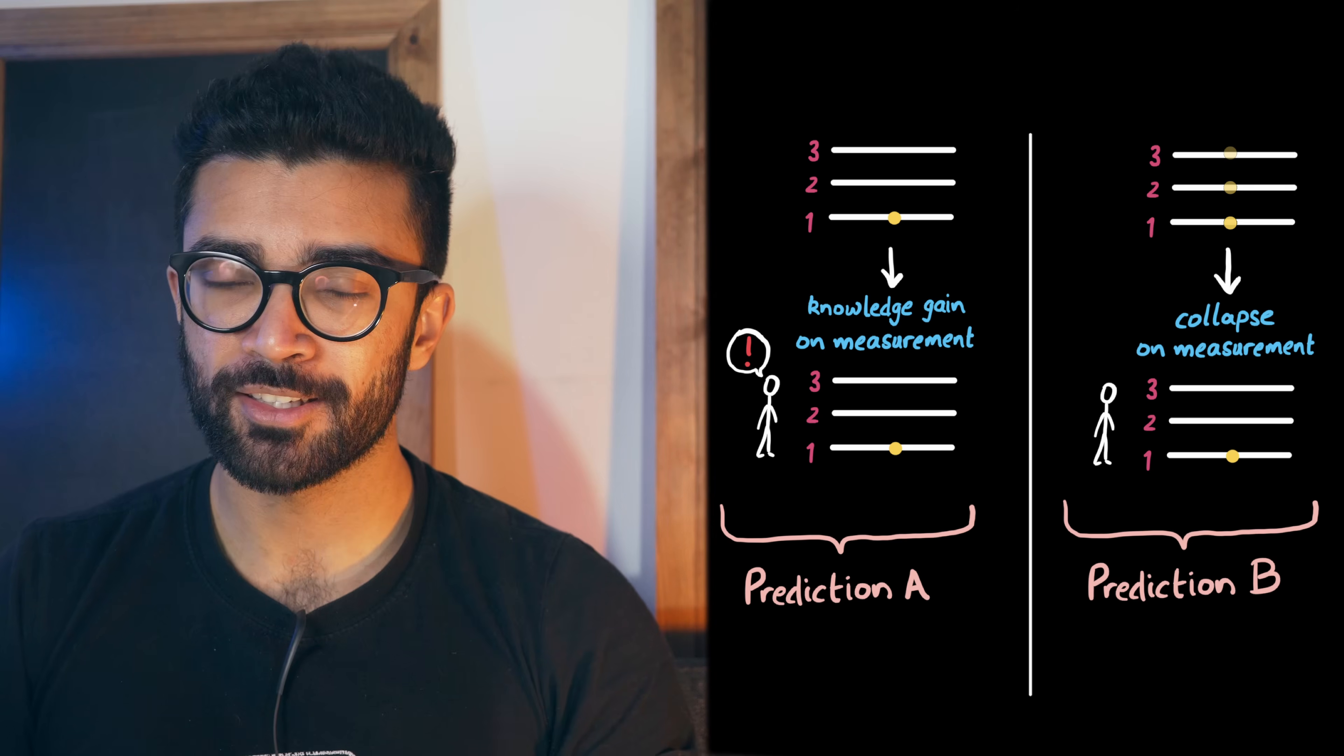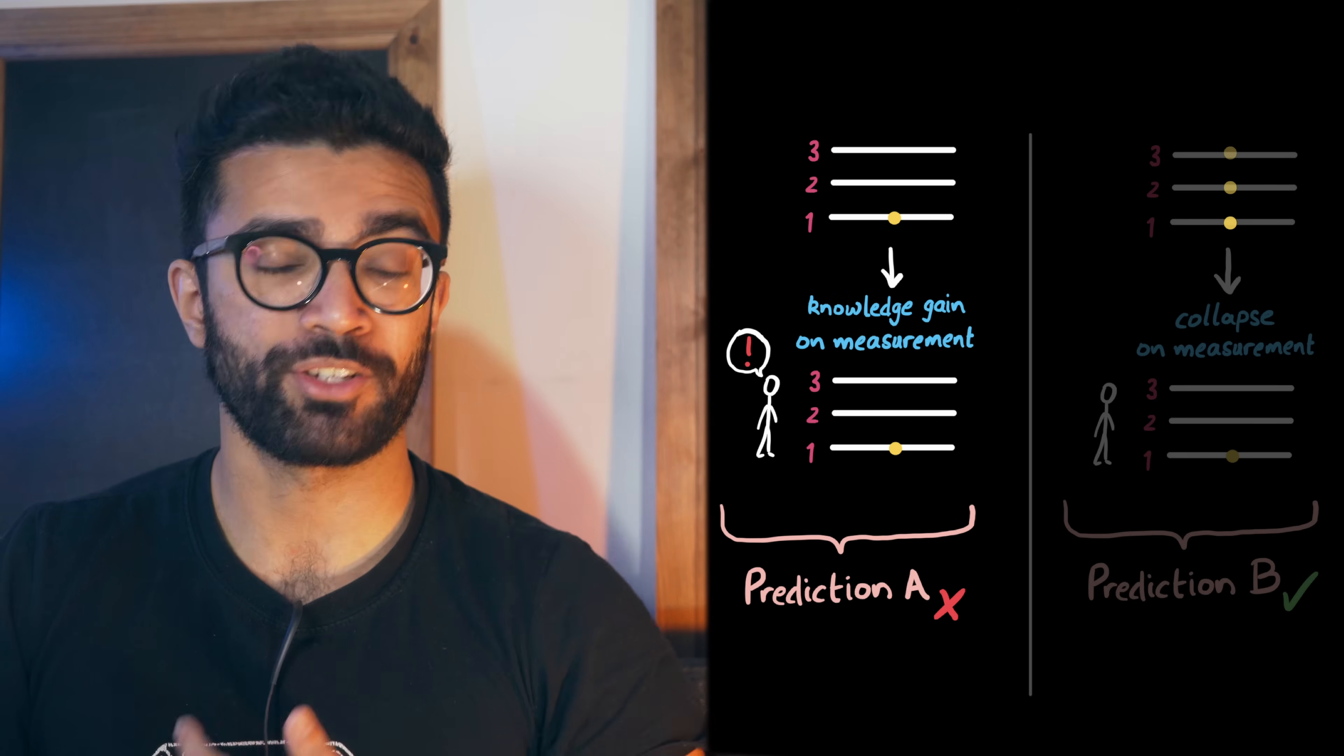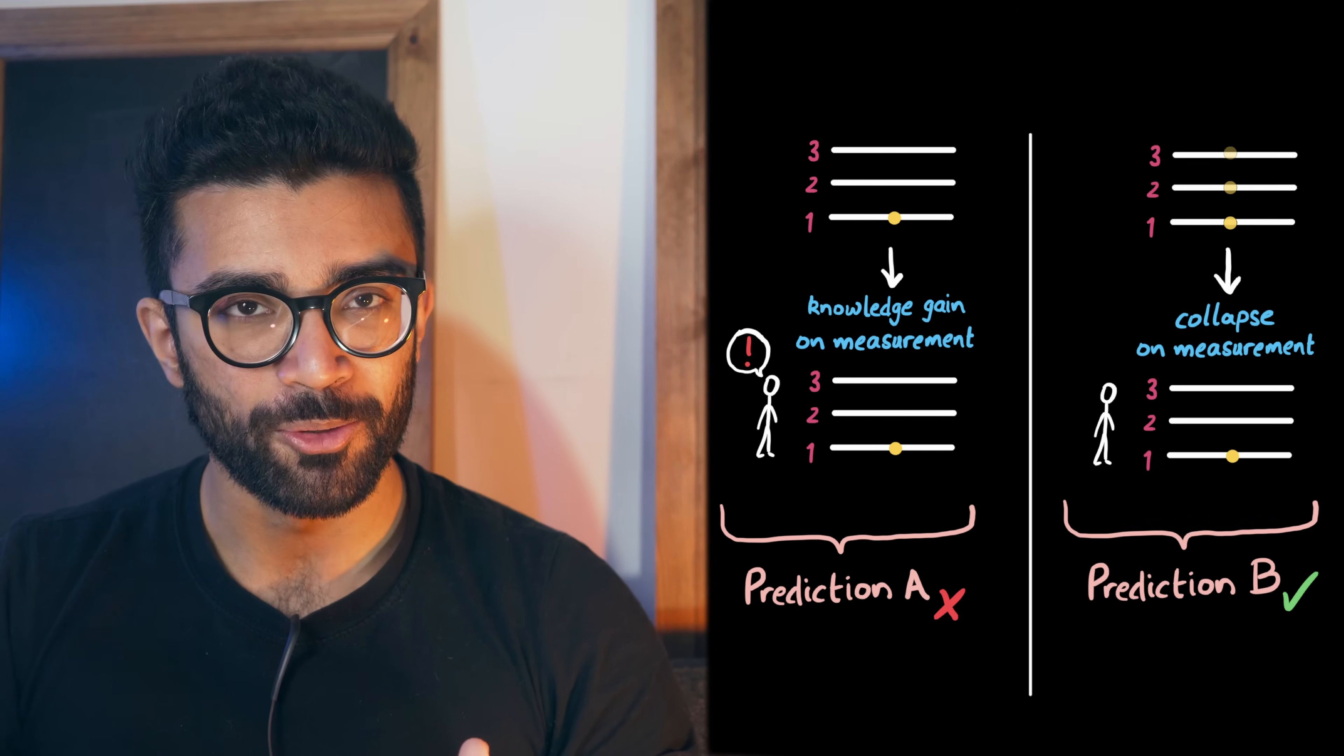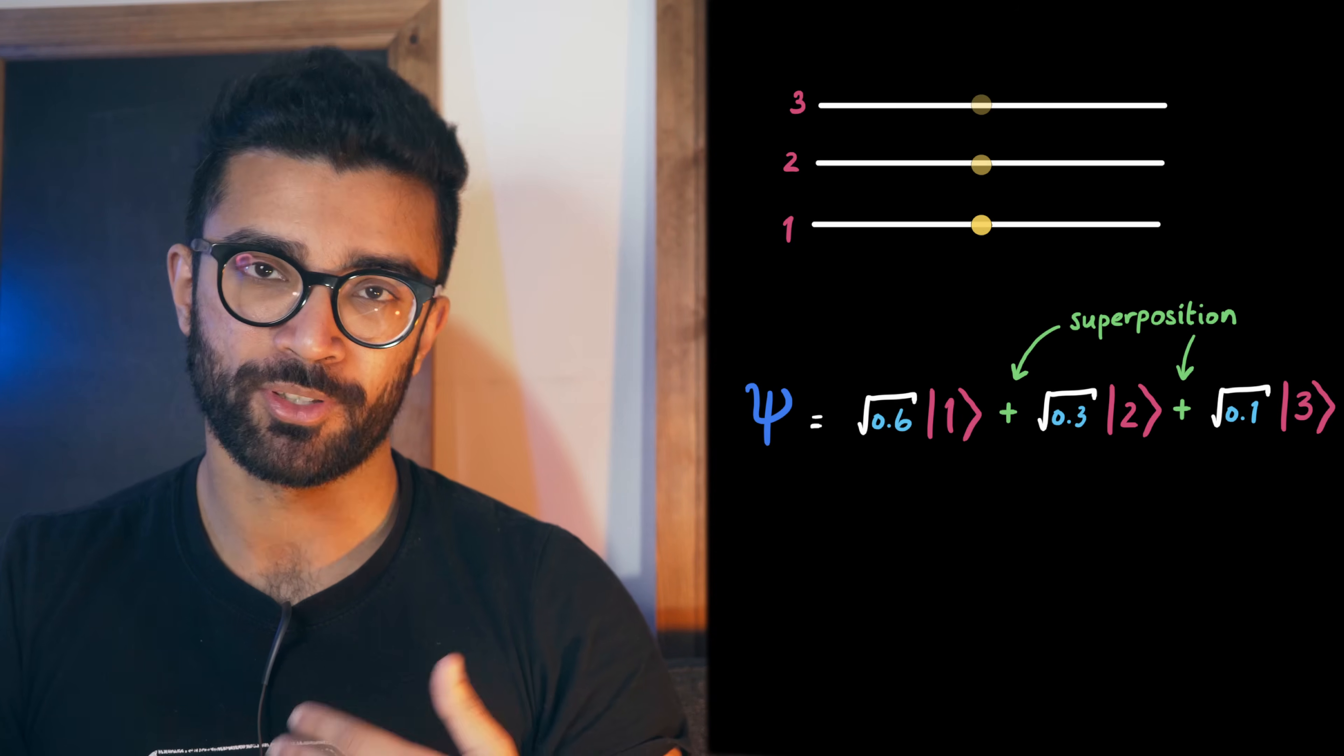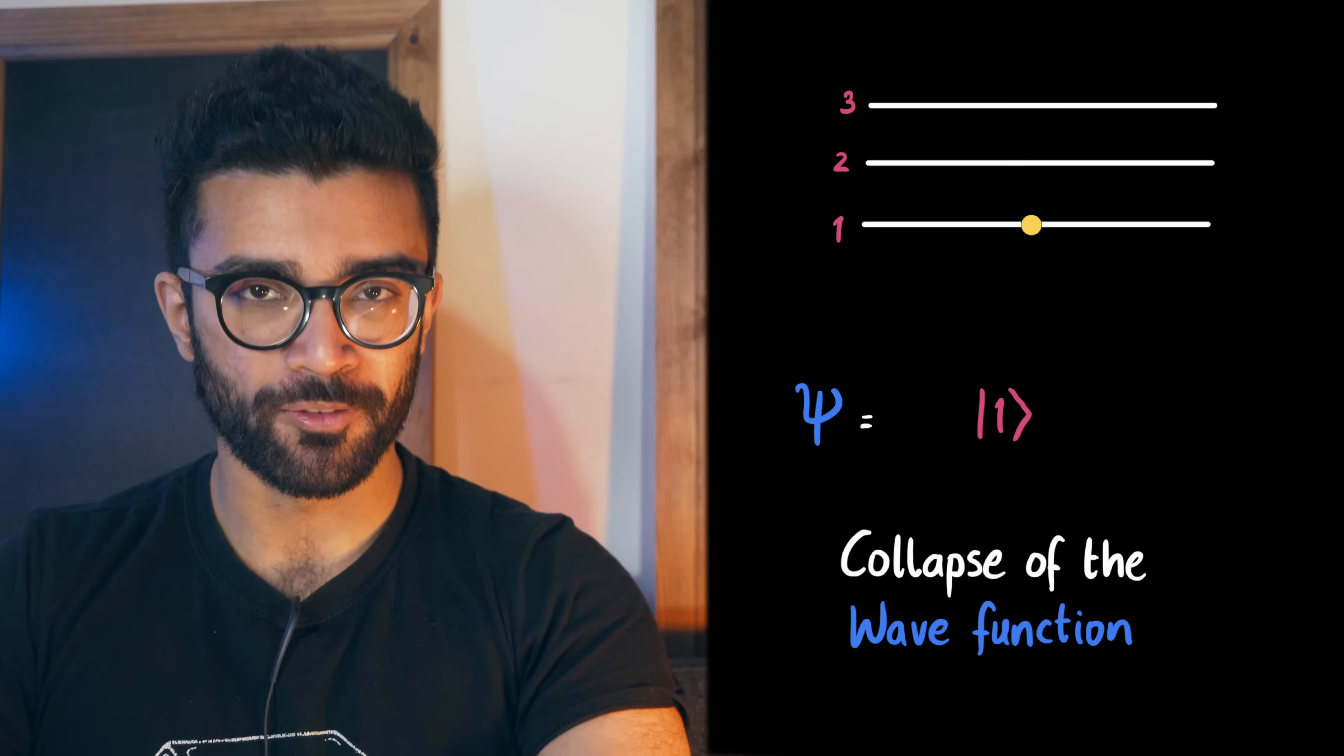And we have already done this, and all of the experiments we've done so far suggest that this version, the superposition of states, is at the very least more correct than this version, where we just find out what state the system is in. For more information on this idea, I'll leave some resources in the description below. But why do we care about all this? Well, the point is that before we measure our system, it's in a blend of all possible states, but as soon as we measure it, it collapses into just one of these states, randomly. This idea is known as the collapse of the wave function.